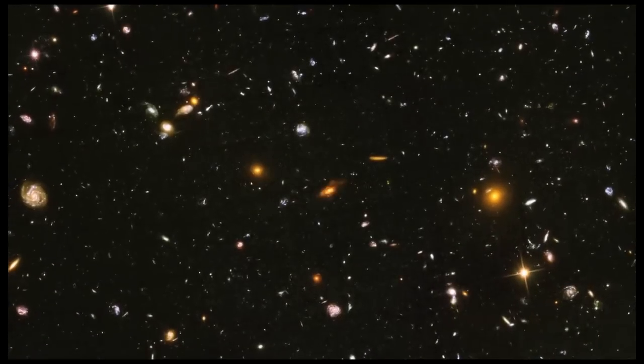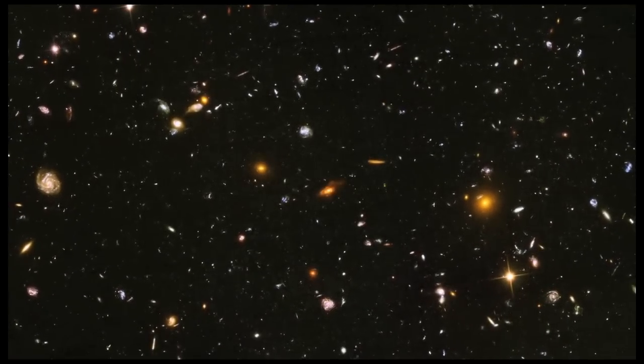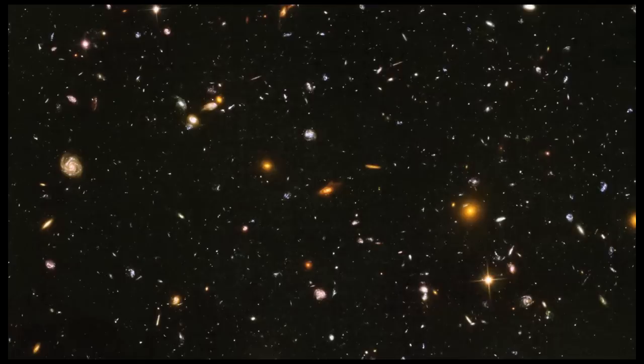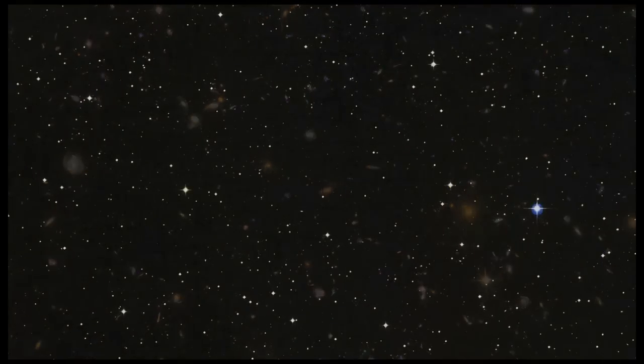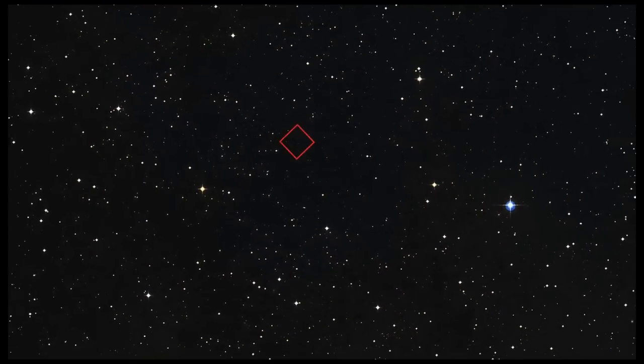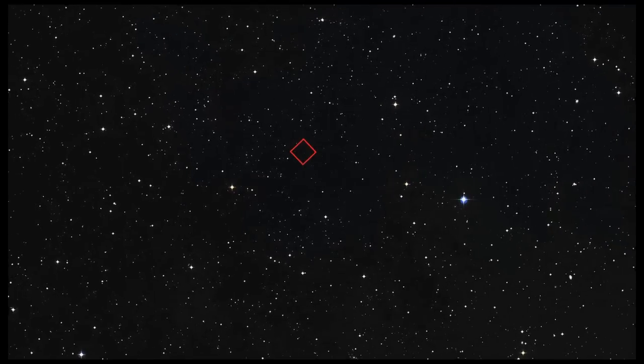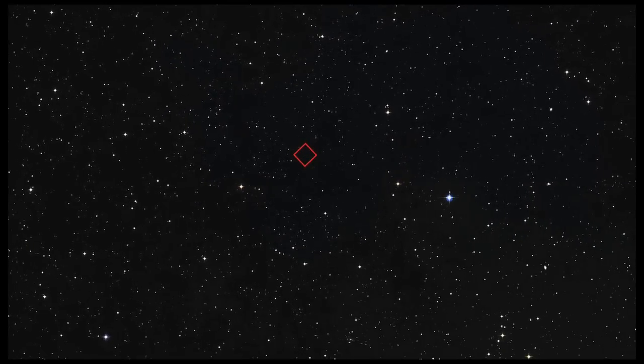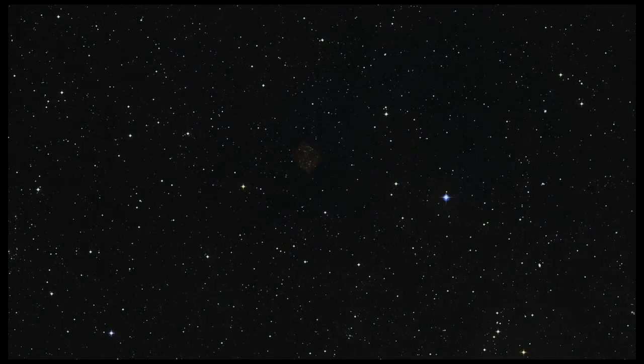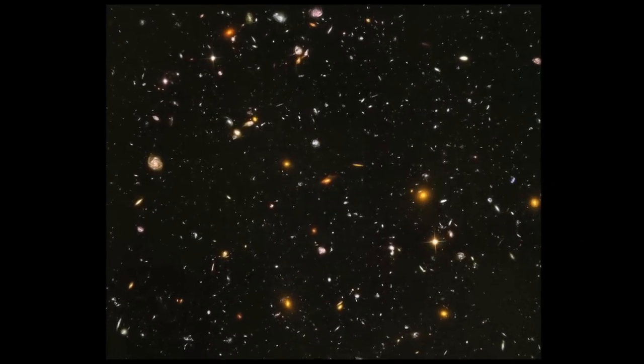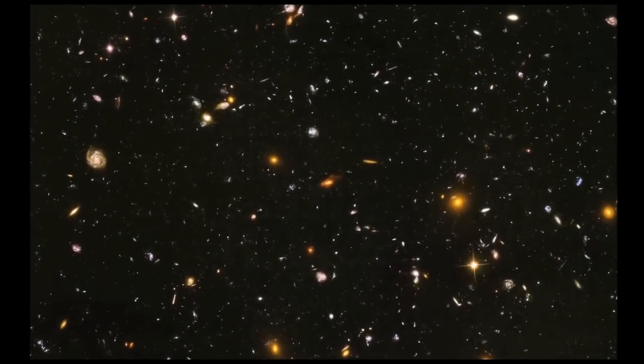This is the Hubble Ultra Deep Field – a visible light image taken in 2003 and 2004 with Hubble's advanced camera for surveys. The picture is of a little patch of sky almost a hundred times smaller than the area of the full moon. It contains no stars visible with the naked eye. But taking a million second exposure of this little black speck of space reveals these vanishingly faint, faraway galaxies.